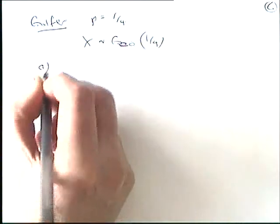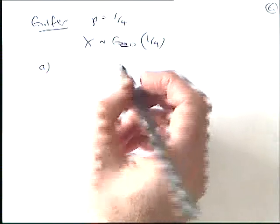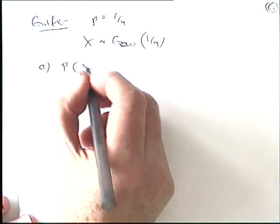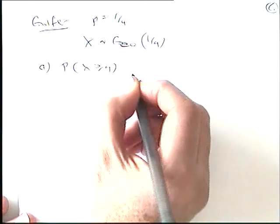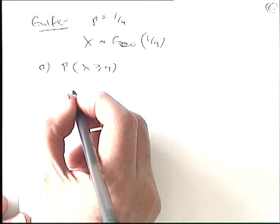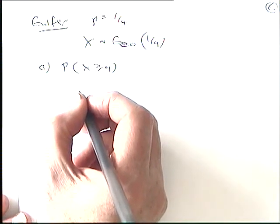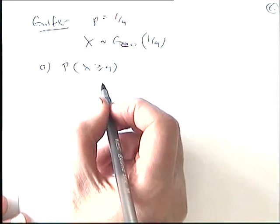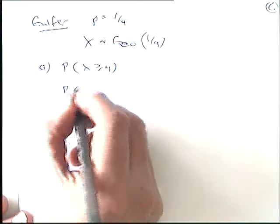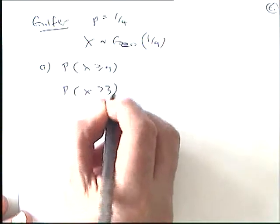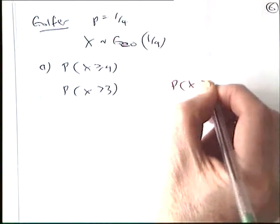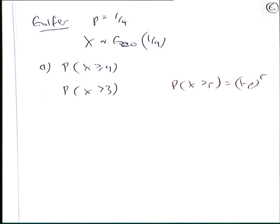And part A of the question in words was saying calculate the probability that X is at least 4. What would that be in notation? Greater than or equal to 4. At least 4. Is there another way that we could write that? X is greater than 3.